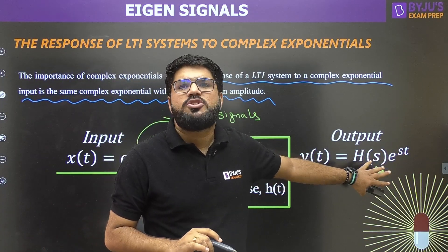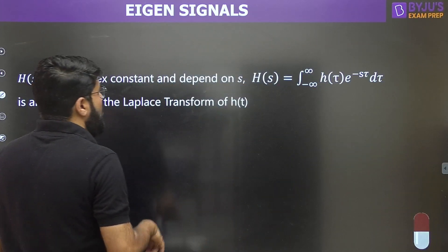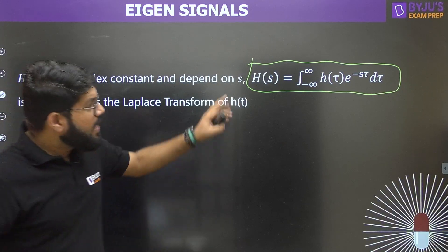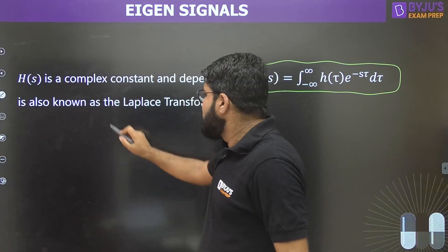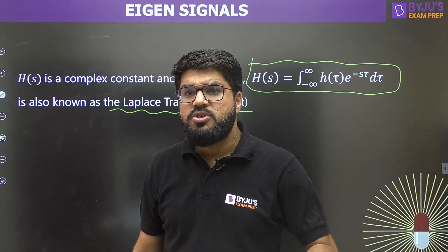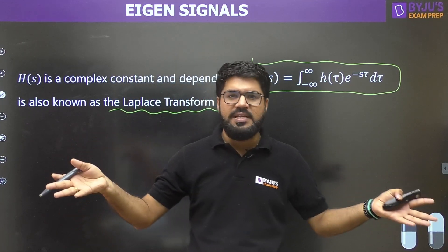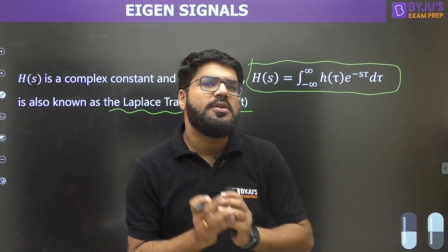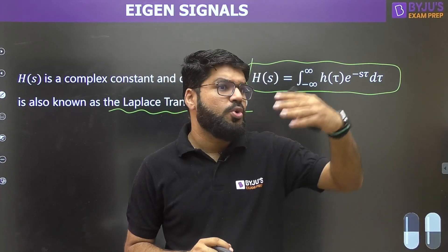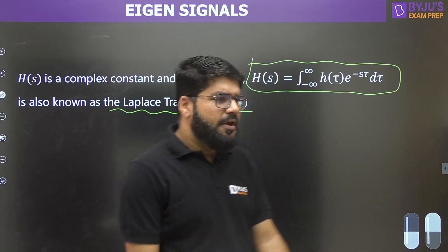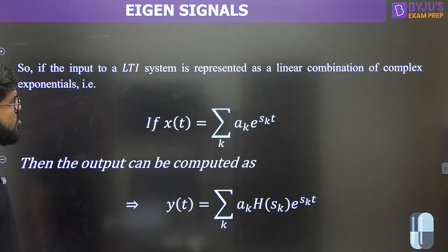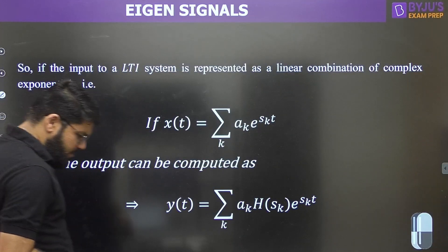The complex constant H(s) by which the output is scaled is: H(s) = integral from −∞ to ∞ of h(τ) · e^(−sτ) dτ. Recall that this is the Laplace transform of h(t), also known as the transfer function of the system. This is where the Laplace transform and the complete transform theory originate.